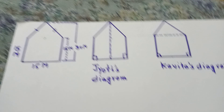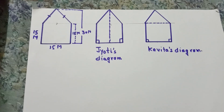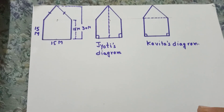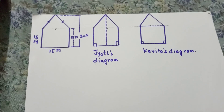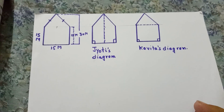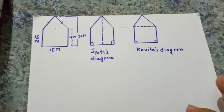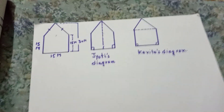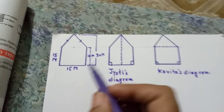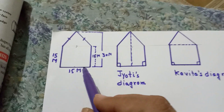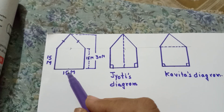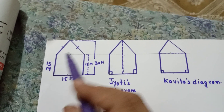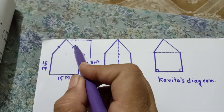Next is question number 10. There is a pentagonal-shaped park as shown in the figure. Jyoti and Kavita divided it into two different ways to find the area. We also have to suggest if there is any other method. A pentagonal shape is a five-sided figure. This side is 15 meters, this is 15 meters, and this is also 15 meters, with a triangular part on top.